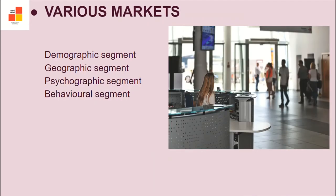Various types of markets are categorized as follows: demographic segment — on the basis of population, age, sex, and occupation; geographic segment — on the basis of climate, cities, and region; psychographic segment — on the basis of lifestyle, social activities, and interests; behavioral segment — on the basis of public opinion. This is how we categorize the various types of markets.